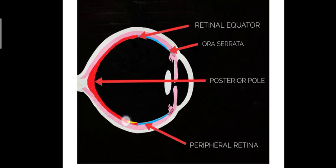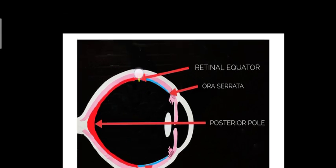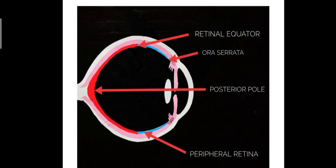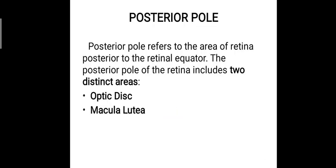The posterior pole is represented by the red-colored area, and the peripheral retina by the surrounding region, both demarcated by the retinal equator. The peripheral retina ends at the ora serrata.